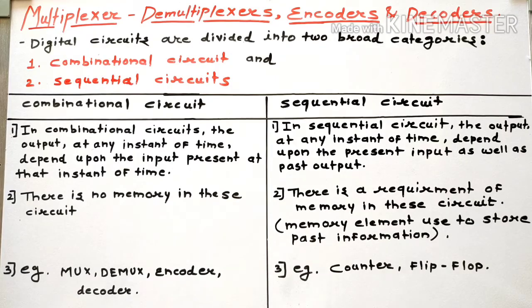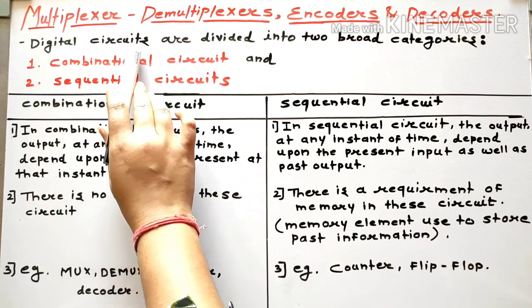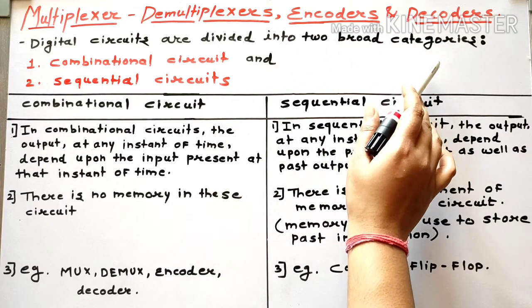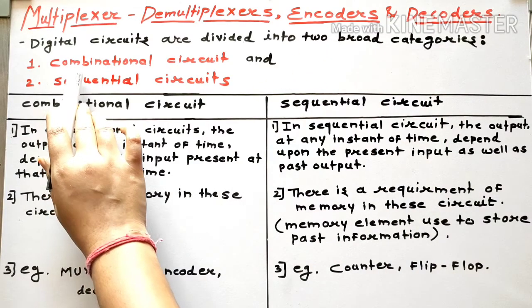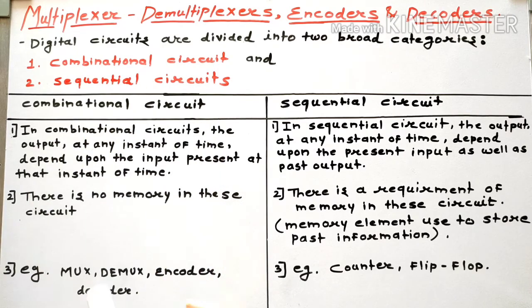From each and every topic, a question you will get to see in the exam. So before coming to the topic, first of all let's come to the basics. The digital circuits are divided into two broad categories: the first one is the combinational circuit, and the second is the sequential circuit. Let's see the difference between them.